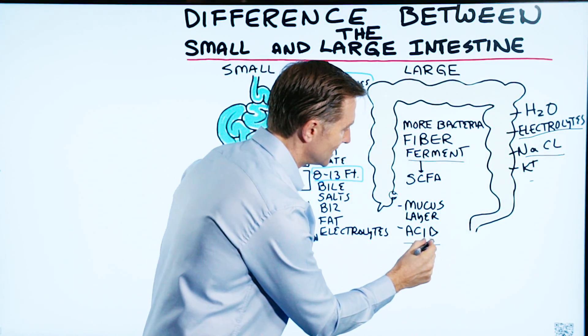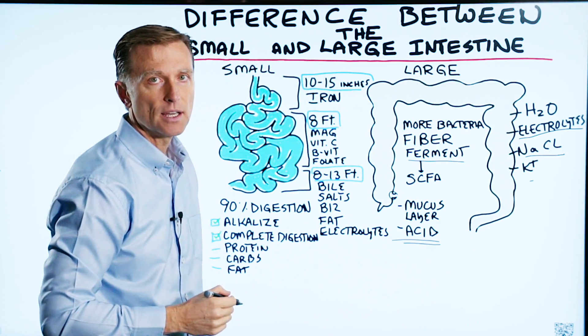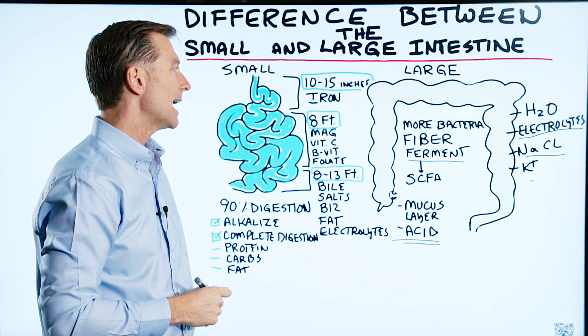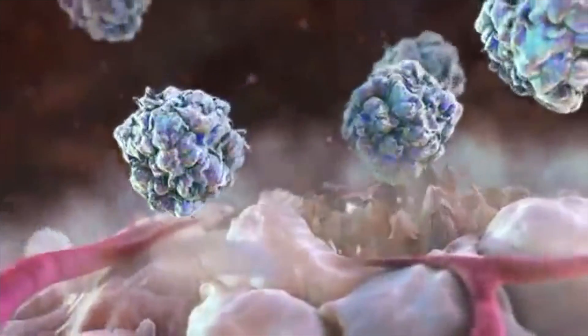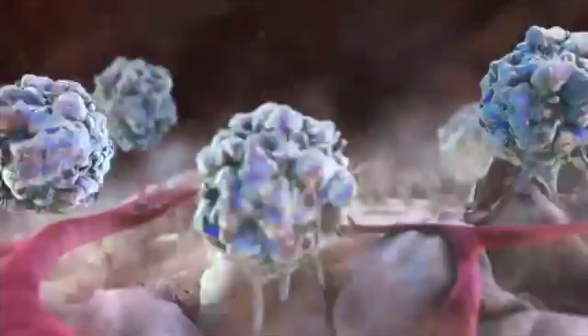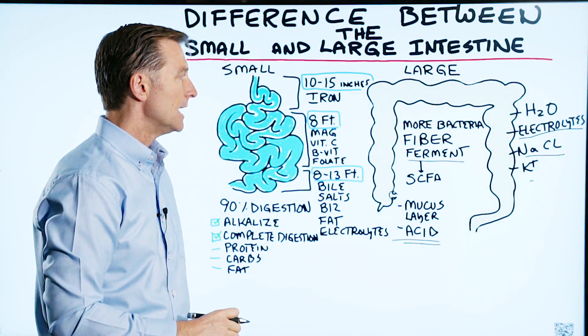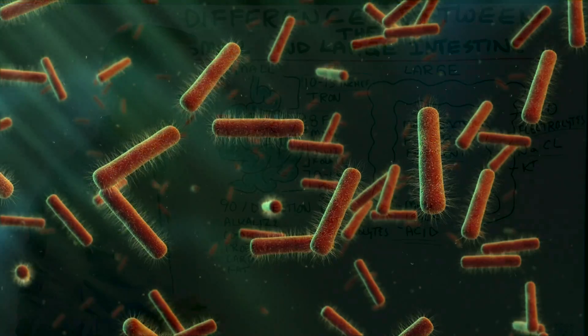Now, the pH of the colon is going to be more acidic from certain bacteria that are making lactic acid. And the purpose of that acid is to kill pathogens that should not be there, but not affect our good bacteria.